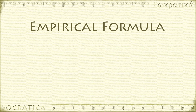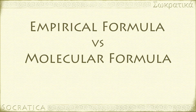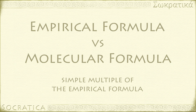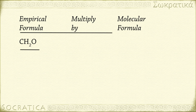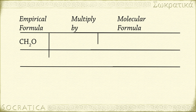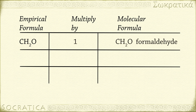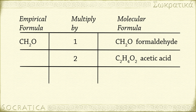Remember, an empirical formula may or may not be the same as the molecular formula. The molecular formula is always a simple multiple of the empirical formula. For example, for the empirical formula CH2O, there are many possible multiples that correspond to different compounds: CH2O is both the empirical and molecular formula for formaldehyde; multiplying by 2 gives C2H4O2, the molecular formula for acetic acid; and multiplying by 6 gives C6H12O6, which is glucose.